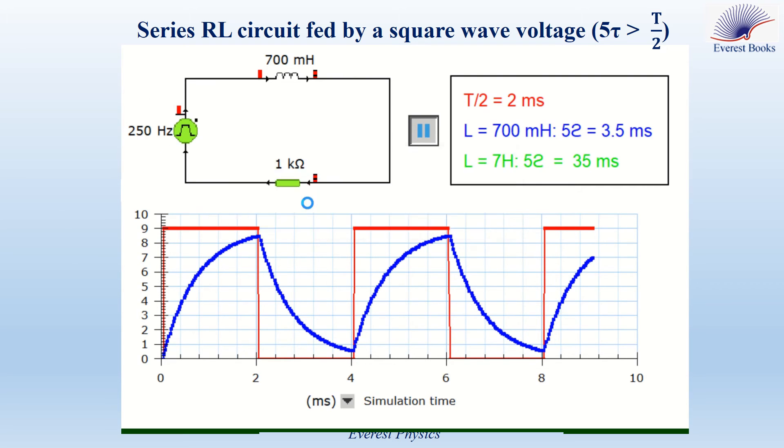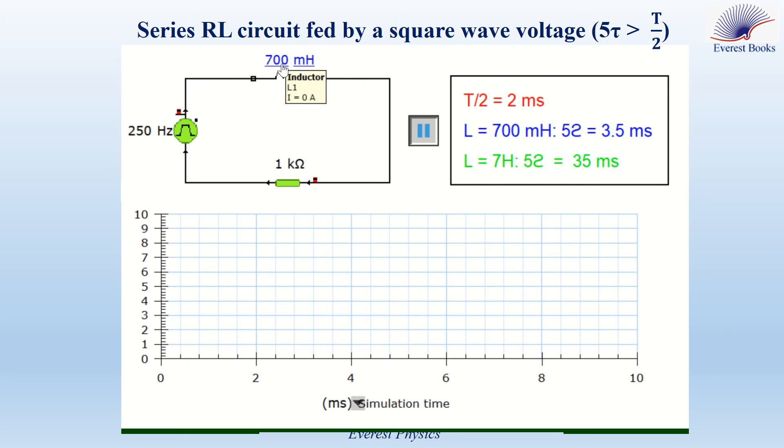Now let's study the second case. If we vary L from 700 mH to 7 mH, in this case,